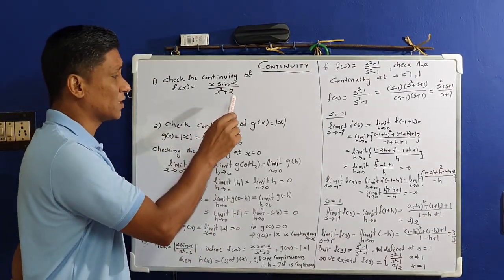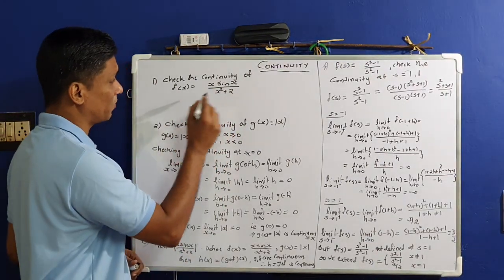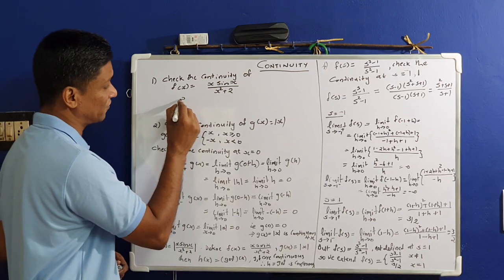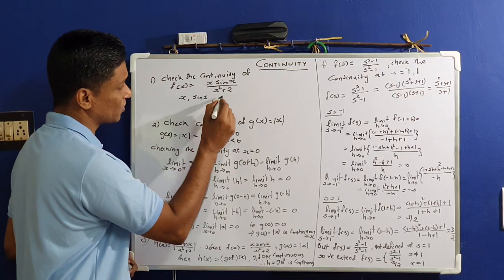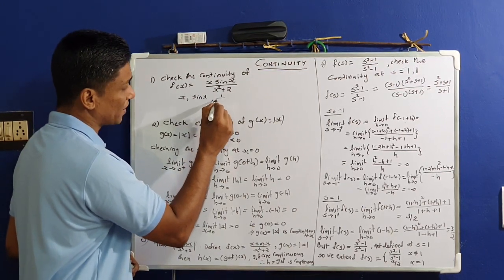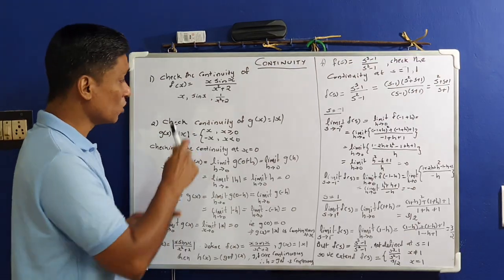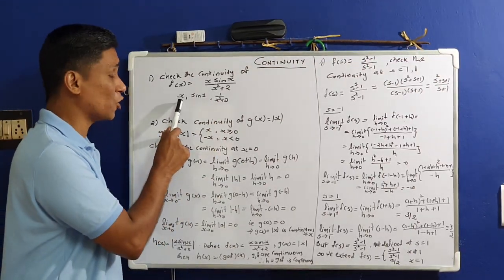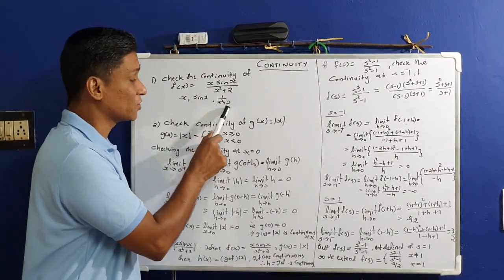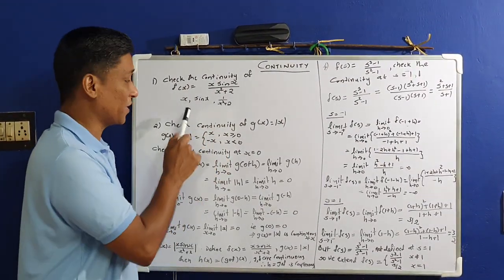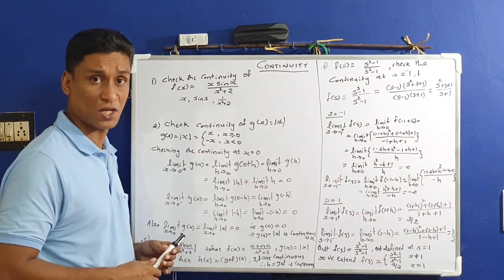This function is a combination of many functions. The component functions are x, sin(x), and 1/(x²+2). Here x is a polynomial function, sin(x) is a trigonometric function, and 1/(x²+2) is another function. All of these are continuous on ℝ.